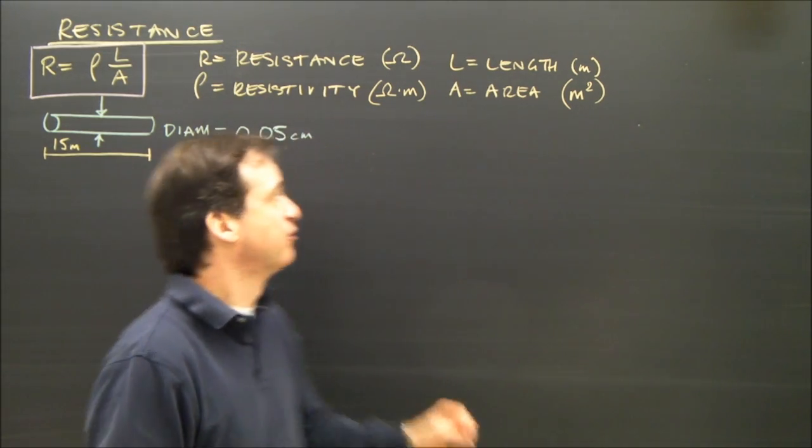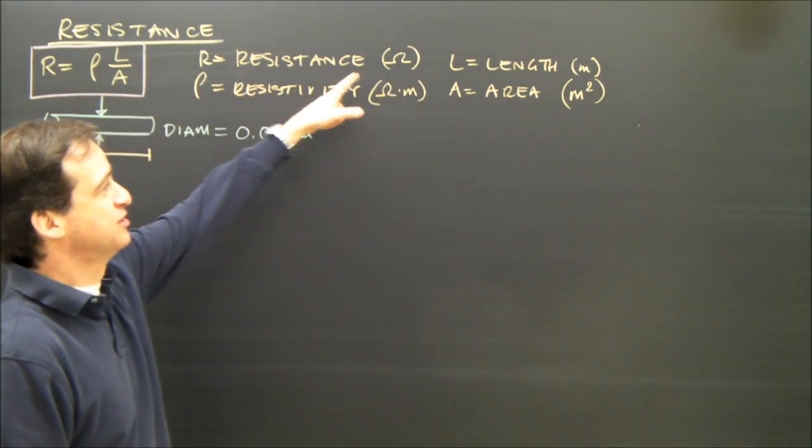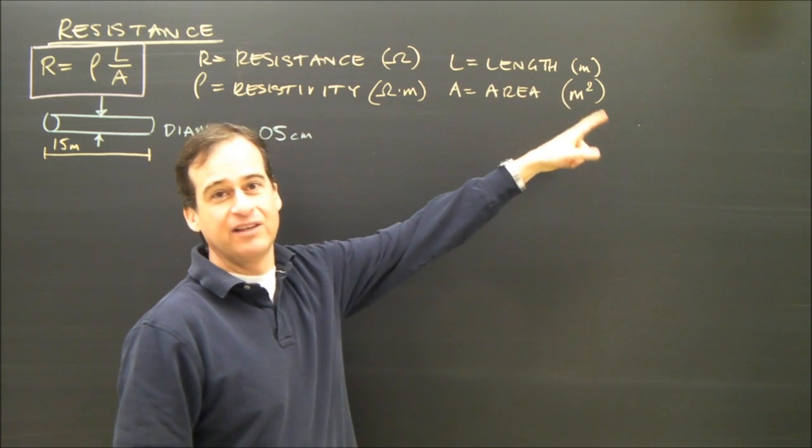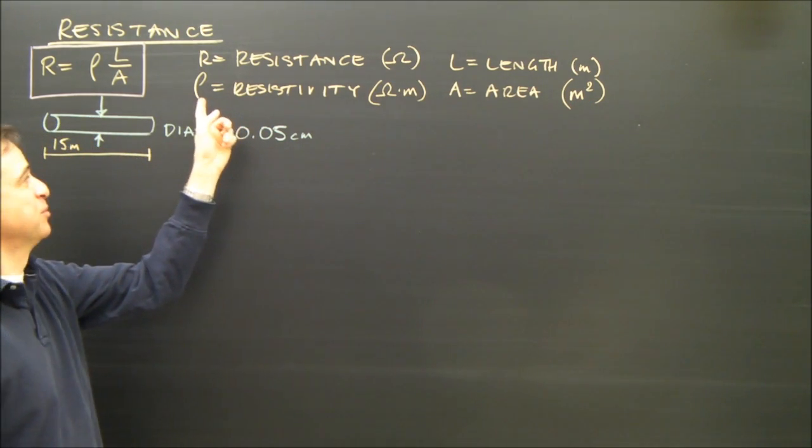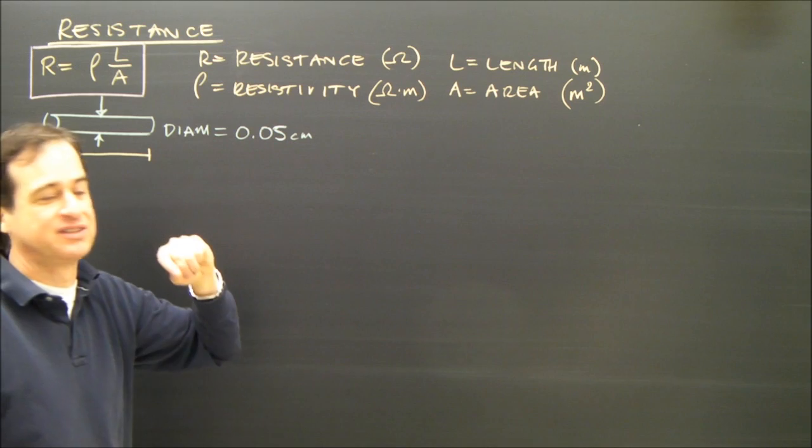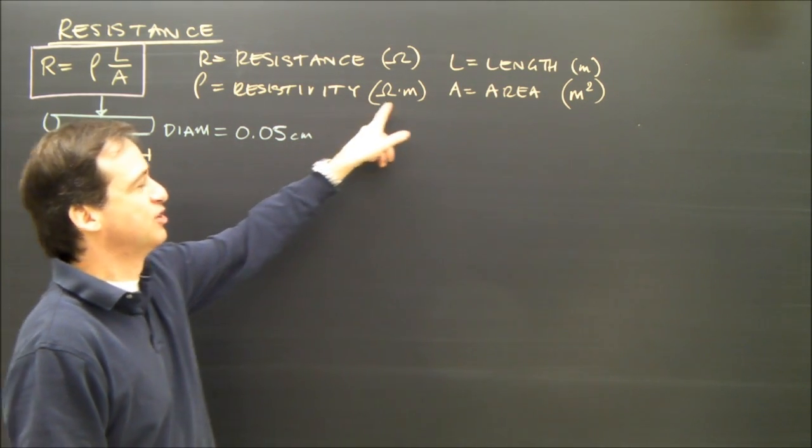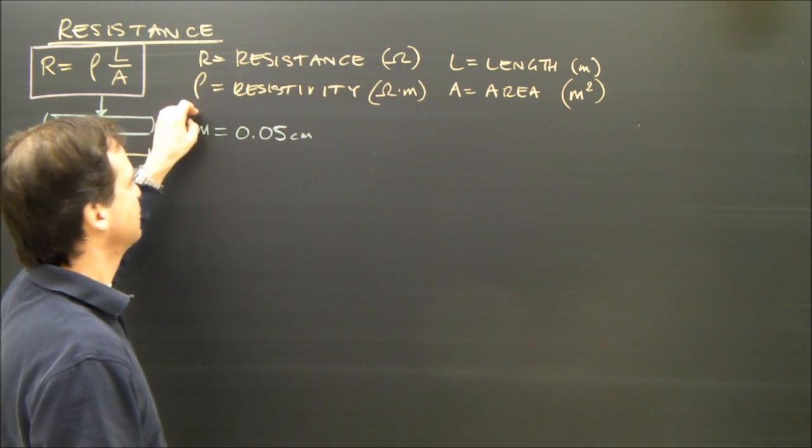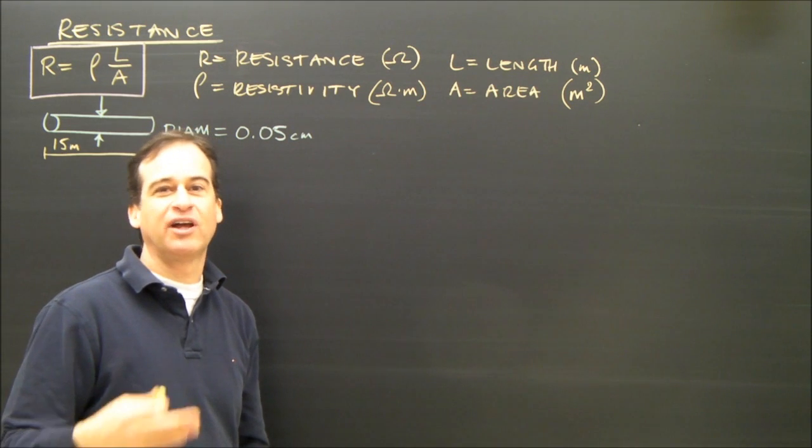The formula has four variables. R is the resistance in ohms. L is the length of the wire in meters. Rho, this symbol here, represents what we call the resistivity, which is in ohm meters, and that basically tells you how much that material has resistance.